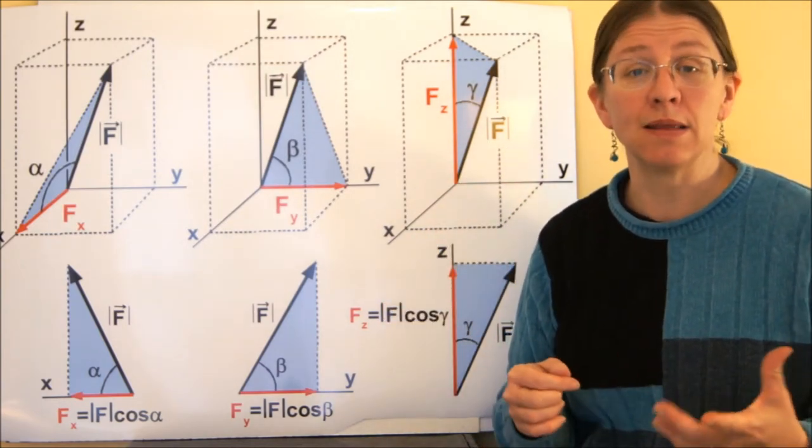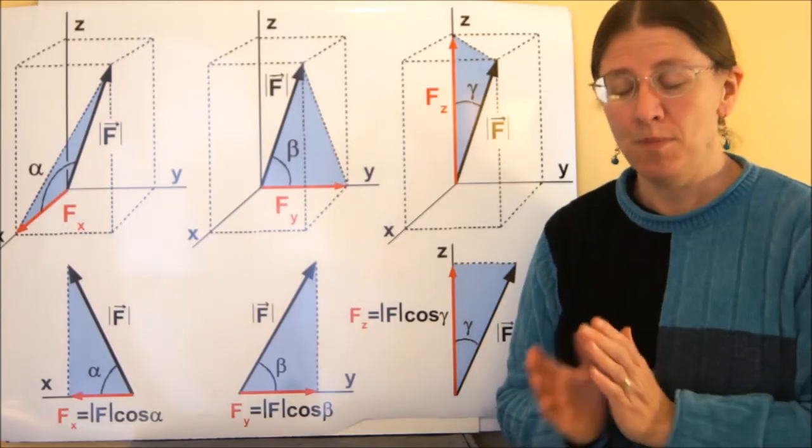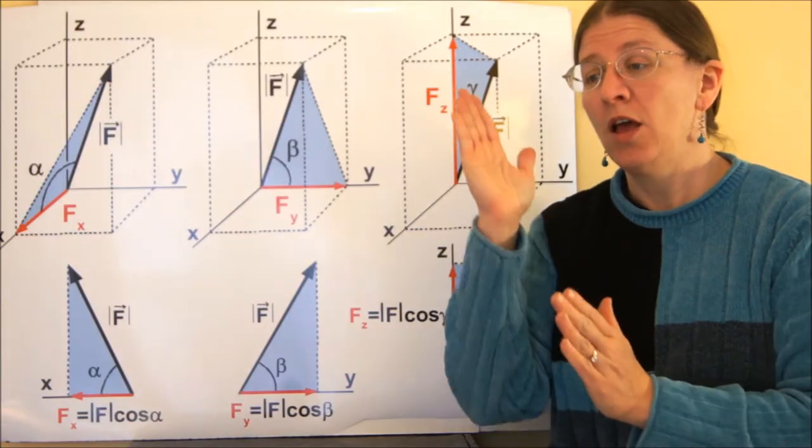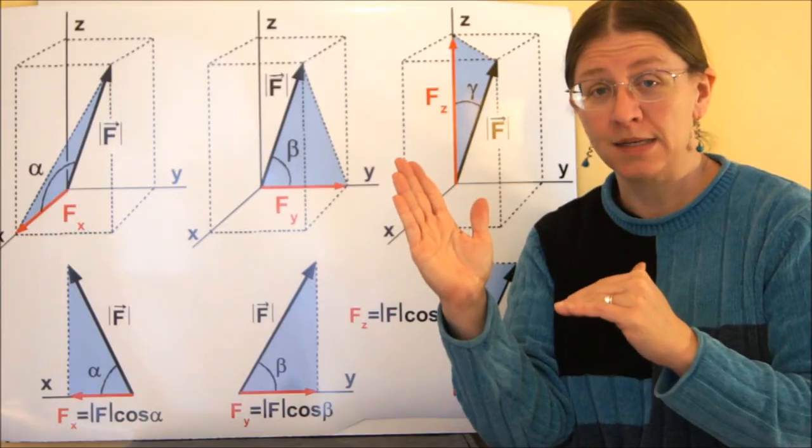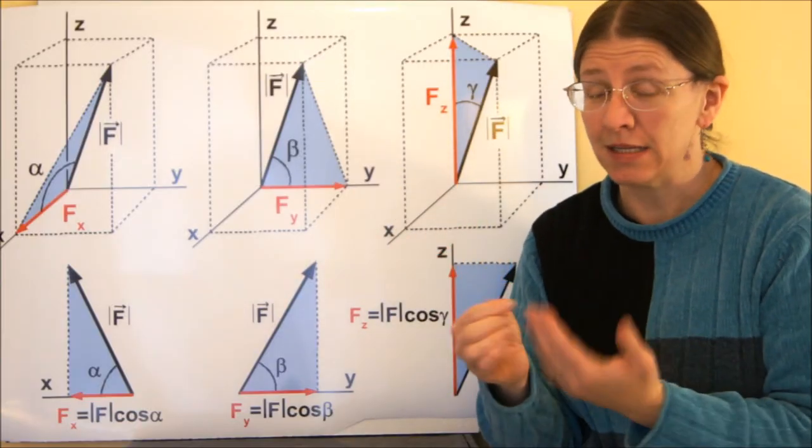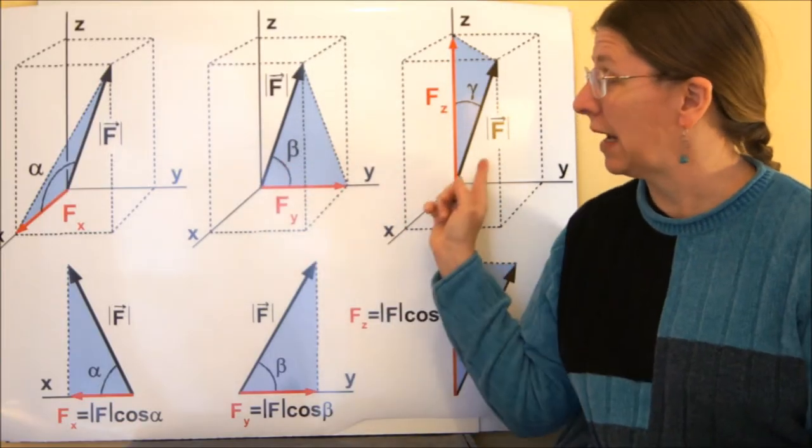Sometimes we call them theta X, theta Y, theta Z. It doesn't matter. These are the angles measured between the vector itself and the positive coordinate axis. So these can be bigger than 90 degrees. These are whatever these triangles are.